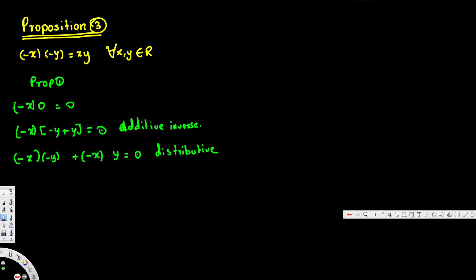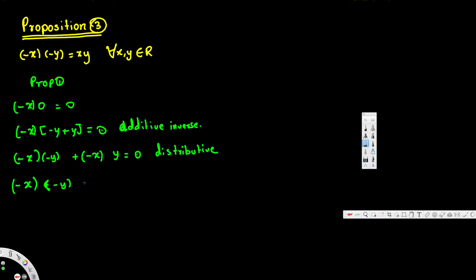The next thing is we are going to use proposition number two. Proposition number two says that negative x times negative y plus negative x times y is equivalent to zero, by proposition number two. We can expand and write it as negative xy.